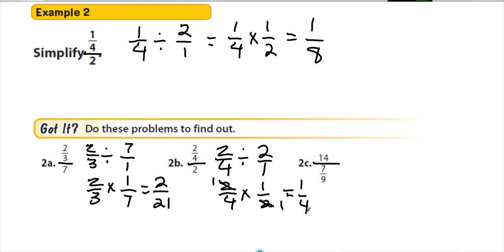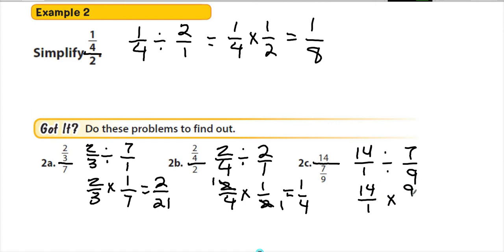2c is 14 divided by 7 ninths — the whole number is on top, but that doesn't change anything. Write it as 14 over 1 divided by 7 ninths, then keep, change, flip to get 14 over 1 times 9 sevenths. We can reduce: 7 goes into 14 twice, leaving a 2 and 1. Then 2 times 9 is 18 over 1, which is 18.